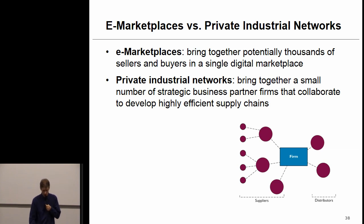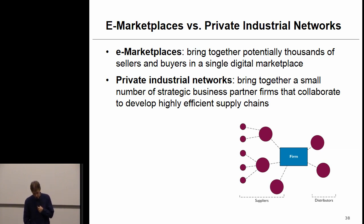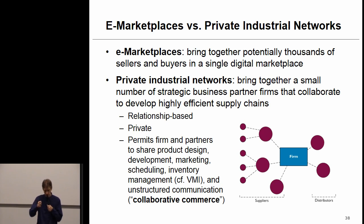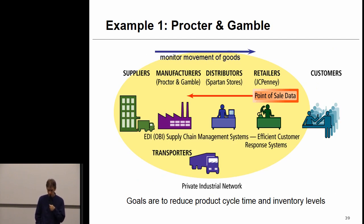E-marketplaces are publicly available and bring together potentially thousands of sellers and buyers in a single digital marketplace. A PIN, private industrial network, brings together a small number of strategic business partners who collaborate — typically relation-based — to develop highly responsive and efficient supply chains. A PIN is private, shielded from the outside world, as opposed to an e-marketplace which is publicly available. It permits firms and partners to share product design, development, marketing, scheduling, and inventory management, and to engage in all kinds of unstructured communications.